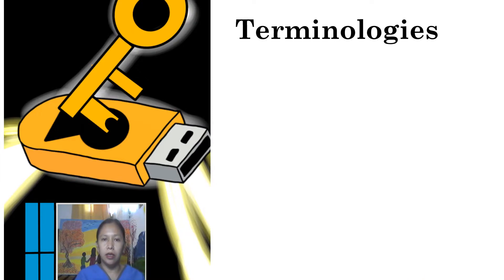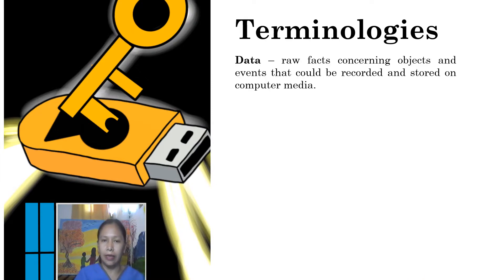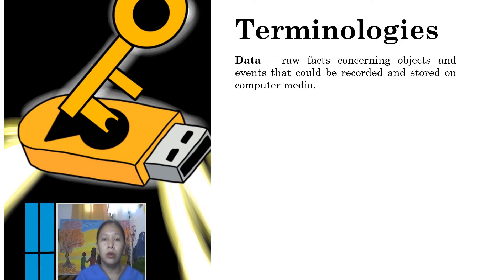Terminologies. The first terminology would be data. Data are the raw facts concerning the objects and events that could be recorded and stored on computer media. Usually, these are the letters, numbers, and alphanumeric characters that we have. Those are data.